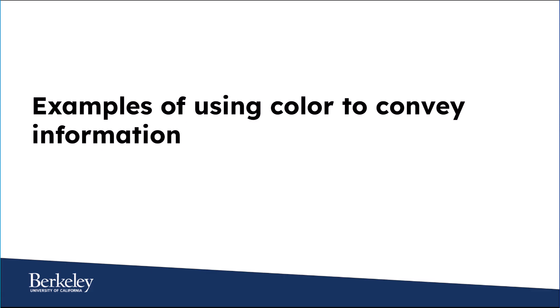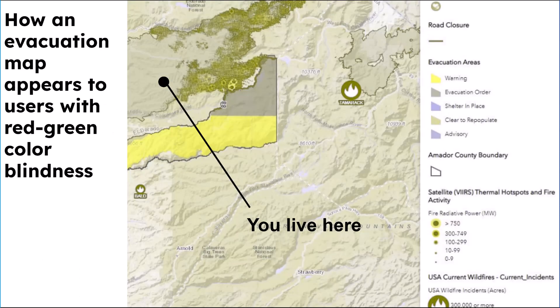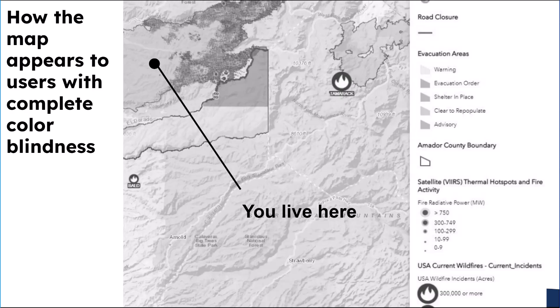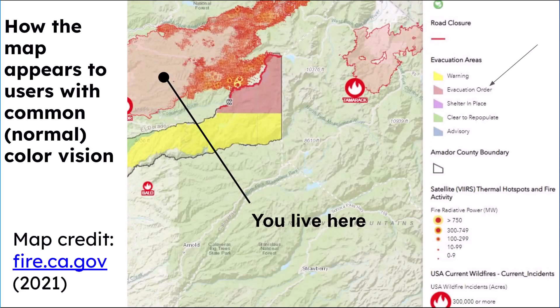Now let's look at an example of using color to convey information. On this slide, we have a fire evacuation map. It has a color-coded legend so people know which areas to evacuate and which areas are safe. This particular map has been altered using a color blindness simulation tool, so the resulting map is various shades of yellow and muted greenish yellows. A line points to a yellow-green area with the text 'you live here.' Imagine you have red-green color blindness and you live here — can you tell if your area is under an evacuation order or if it's clear to repopulate? Here's the same map as it appears to someone with complete color blindness. Here's the original map. The area that the arrow is pointing to appears as red for people with color vision. The legend shows that red means to evacuate and green means it's clear to repopulate. In the first map we saw, green and red looked very similar.